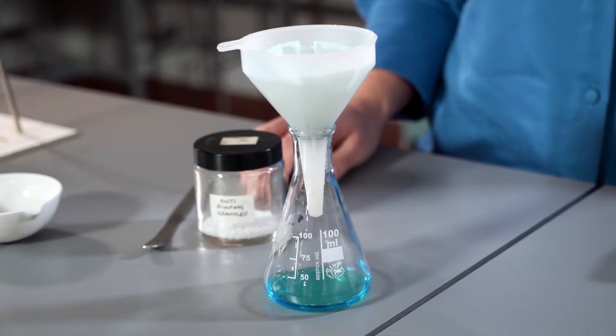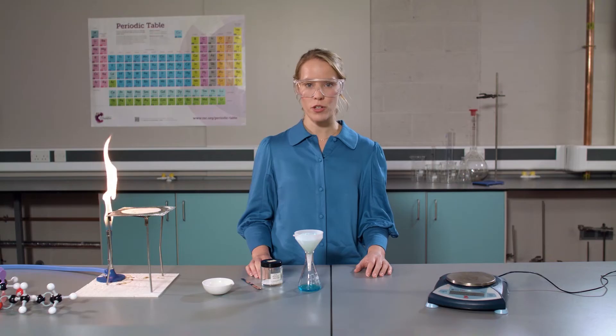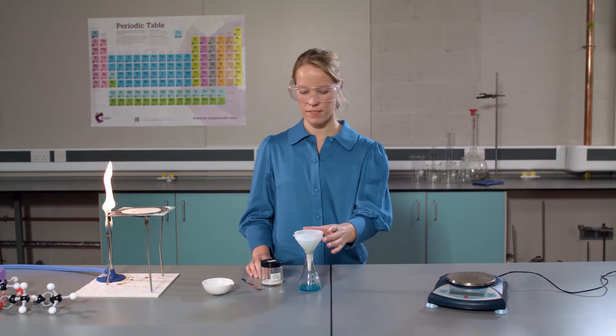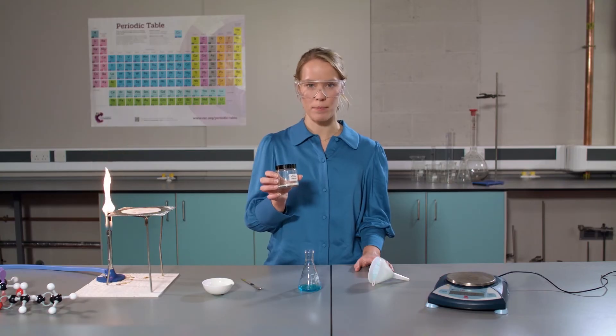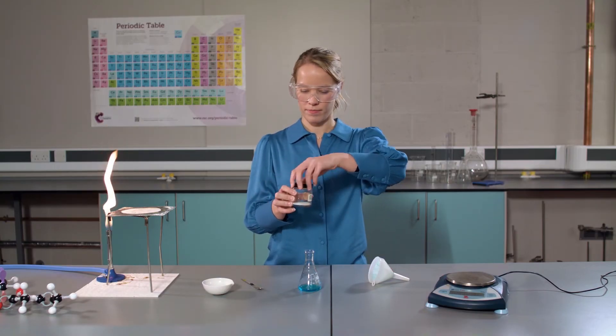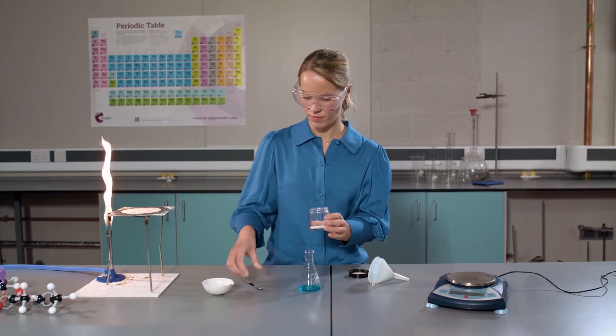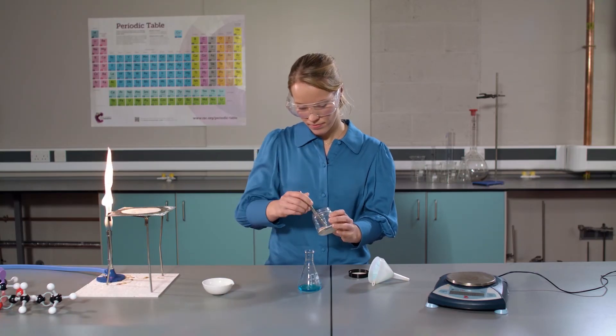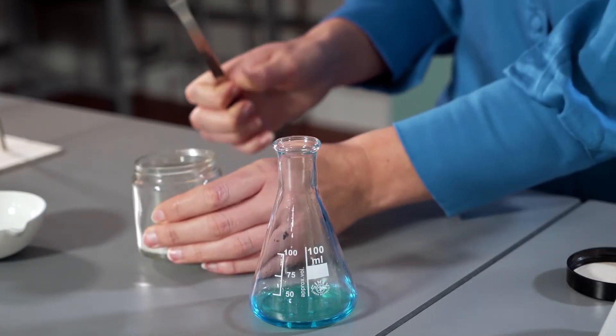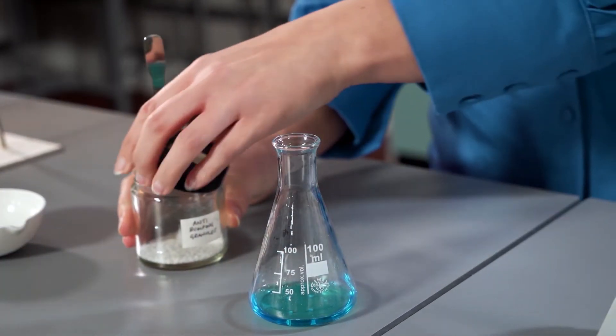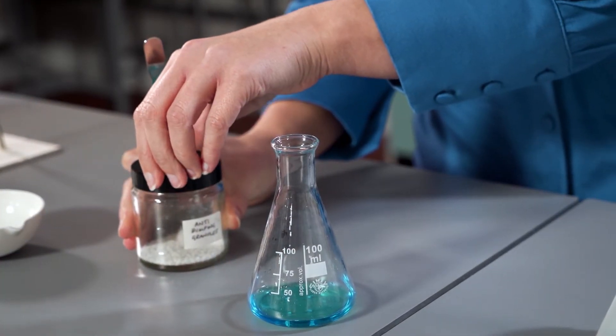Now we need to remove excess water by evaporation to make a concentrated solution of copper sulfate. Before we start, I need to add two to three anti-bumping granules. These will help maintain a smooth boiling action but do not react with any of the particles in the flask.